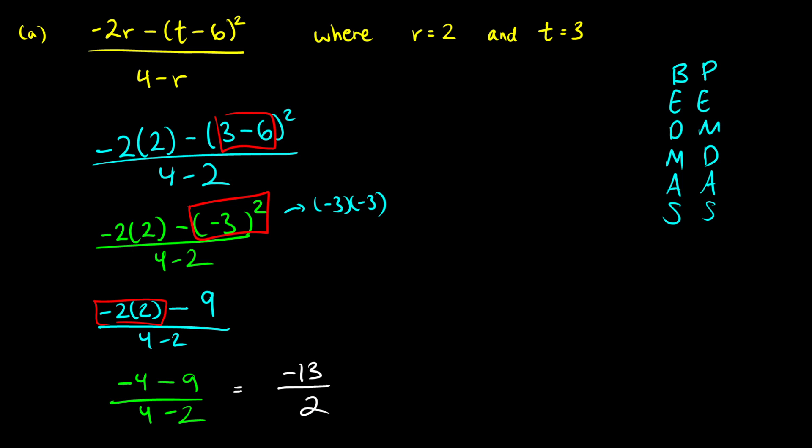At this point, if we could simplify, we could. But negative 13 over 2 cannot be simplified further. If we want, of course, we could just turn this into a decimal form and we get negative 6.5. But typically, you would want to leave it in fraction form because that is precise. So that's the first question.